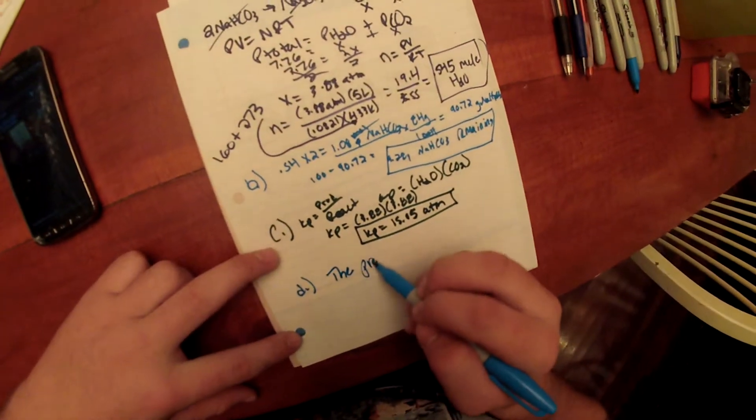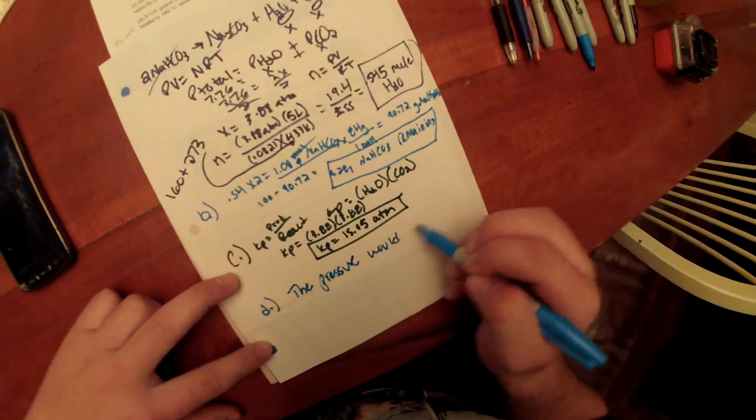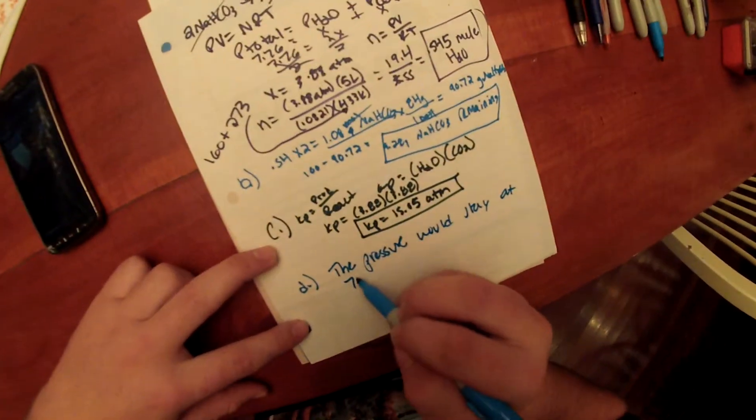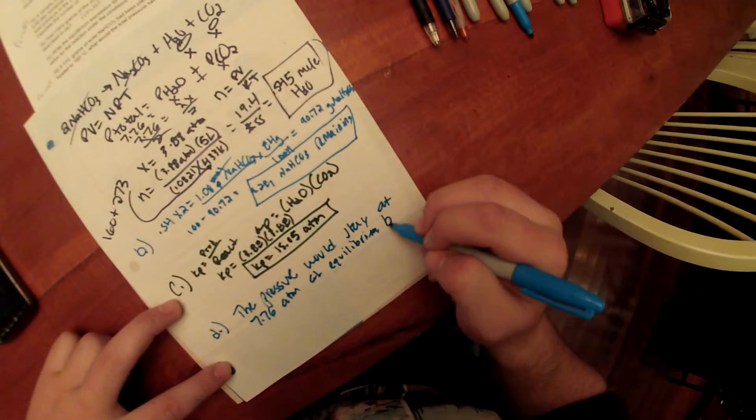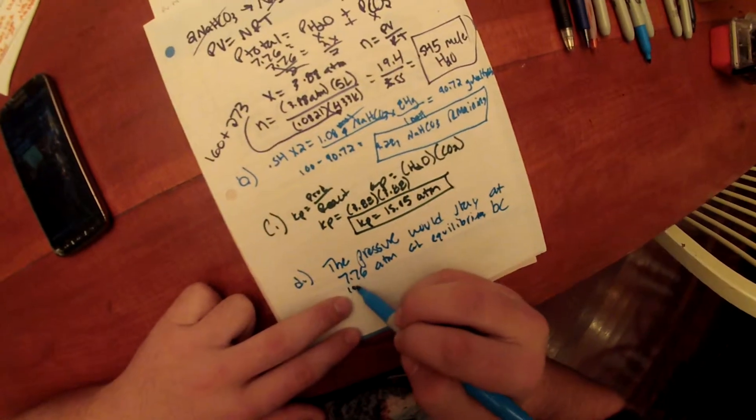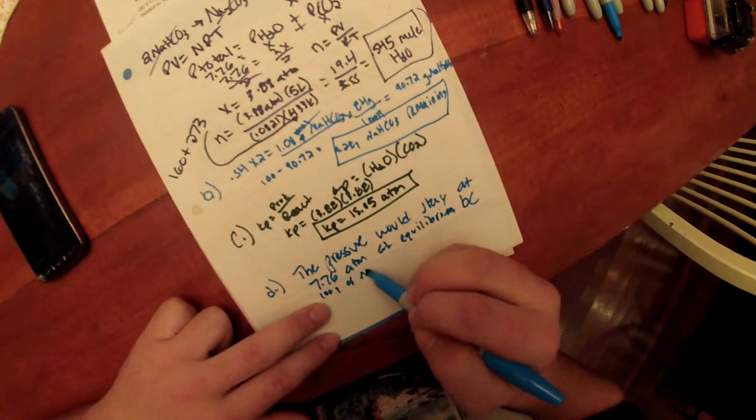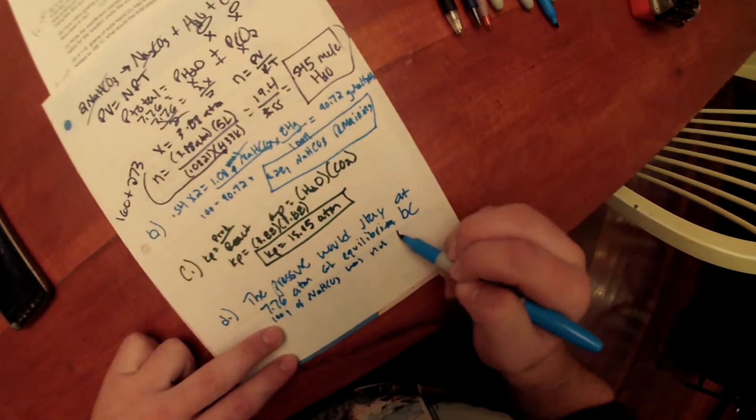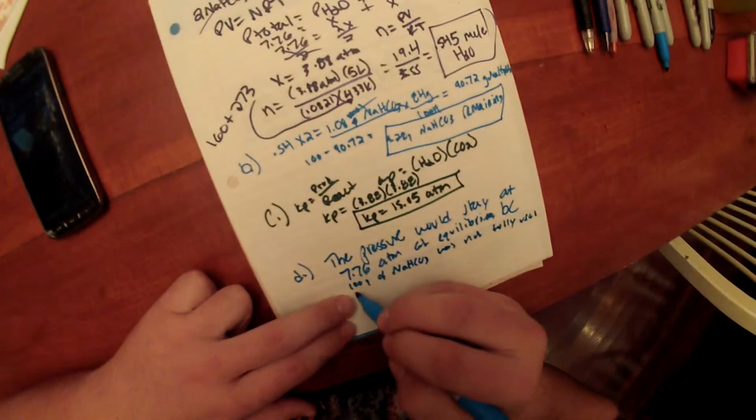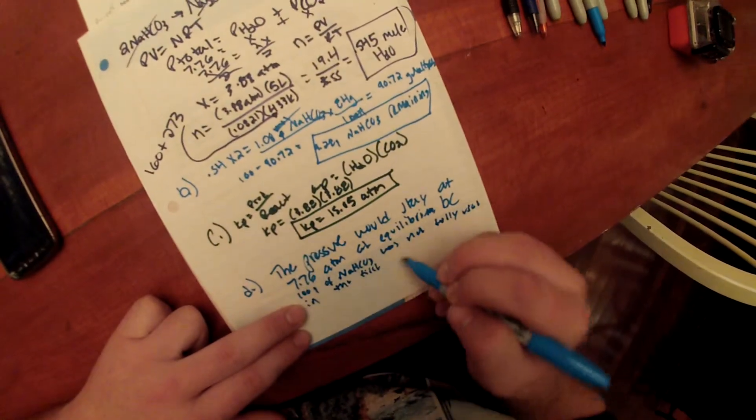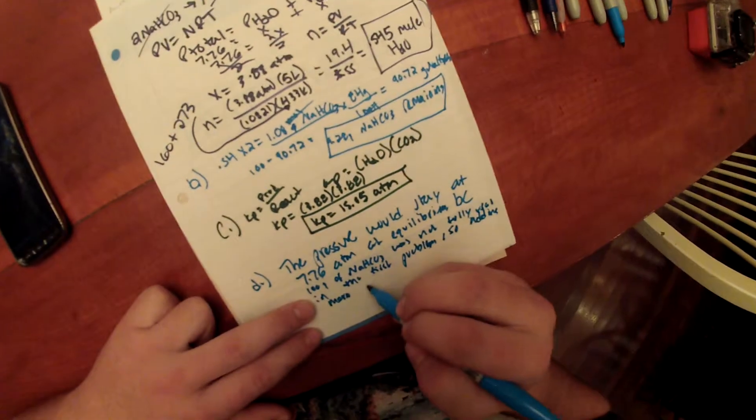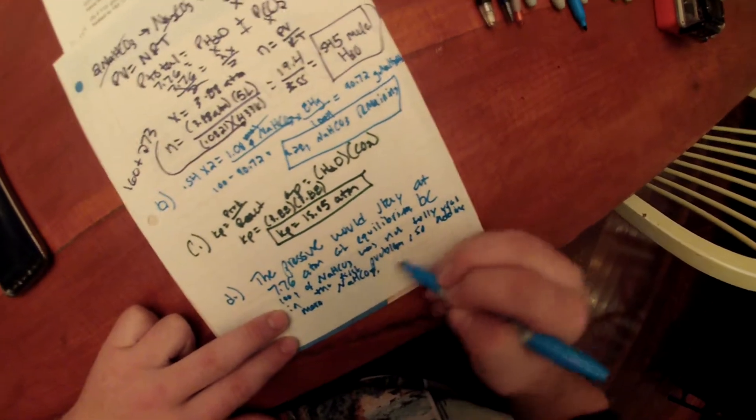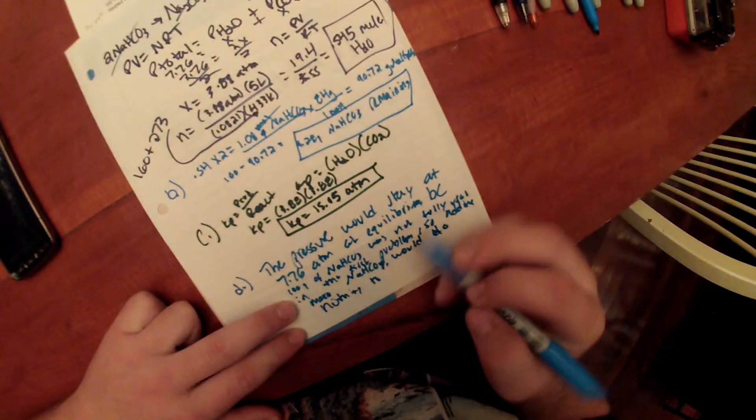The pressure would stay at 7.76 ATMs at equilibrium because 100 grams of NaHCO3 was not fully used in the first problem. So, adding more NaHCO3 would do nothing to final pressure.